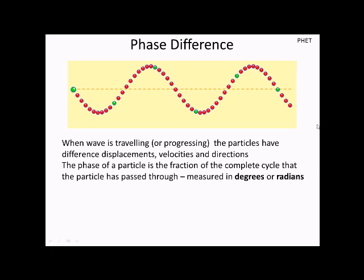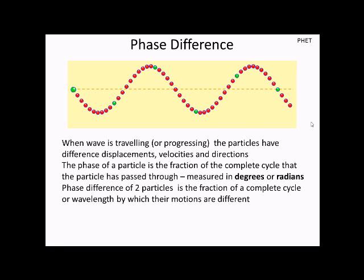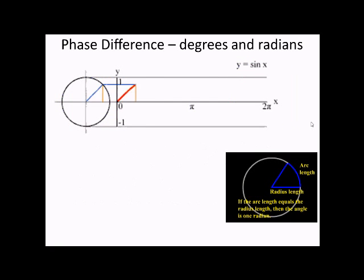We usually measure this in radians, but we can also measure it in degrees. The phase difference of two particles is the fraction of a complete cycle or wavelength by which their motions are different. Remember that two pi radians make up 360 degrees.